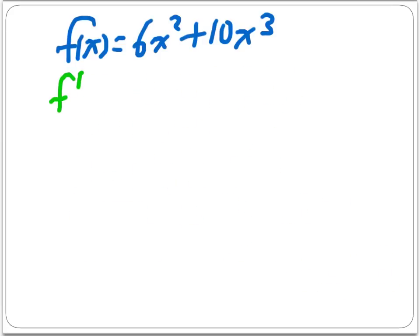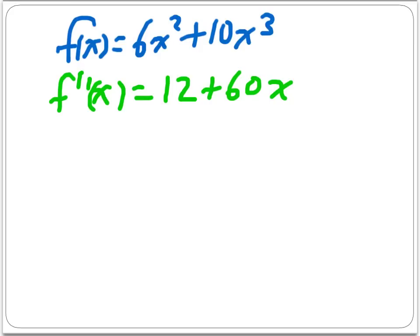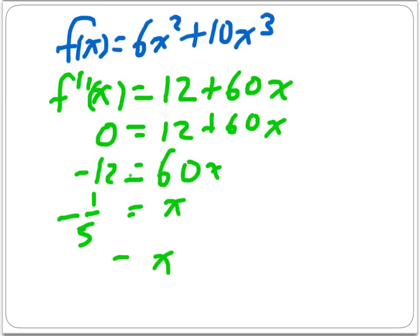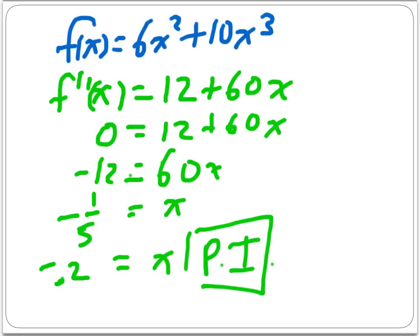From the second derivative standpoint, deriving f′(x) = 12x + 30x² again gives f″(x) = 12 + 60x. Setting this equal to 0 and solving gives x = −1/5, which is approximately −0.2. This confirms the point of inflection estimated at −0.25 on the graph. This is how we confirm algebraically what we saw graphically.